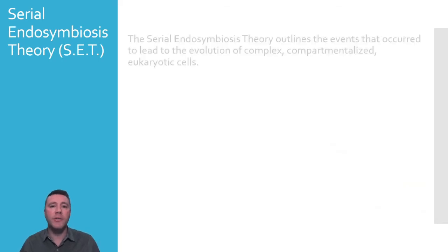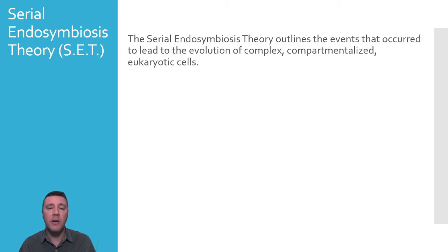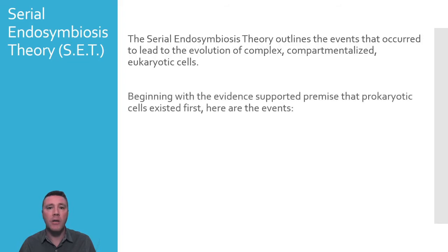The Serial Endosymbiosis Theory, or SET, is the prevailing scientific theory that outlines the origin of eukaryotic cells from prokaryotic organisms. SET was first proposed in the early 1900s, but was truly advanced and supported by microbiological evidence in the 1960s by Dr. Lynn Margulis. Widely recognized as one of the most important scientists of the modern era, she proposed the mechanisms by which prokaryotic cells could come to form eukaryotic cells, and her work was instrumental in providing the supporting evidence.